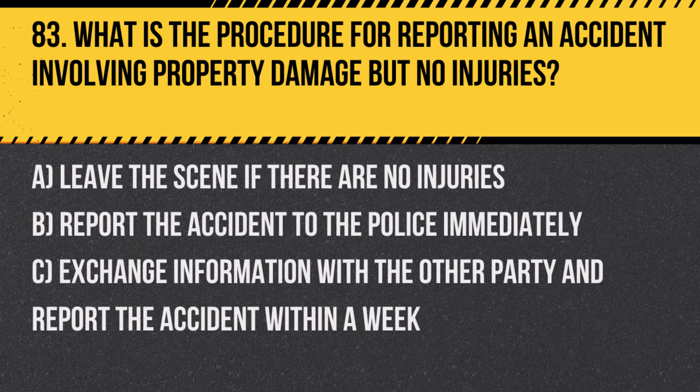Question 83: What is the procedure for reporting an accident involving property damage but no injuries? A. Leave the scene if there are no injuries. B. Report the accident to the police immediately. C. Exchange information with the other party and report the accident within a week. Answer: B. Report the accident to the police immediately. Prompt reporting helps in the proper documentation and handling of the incident.